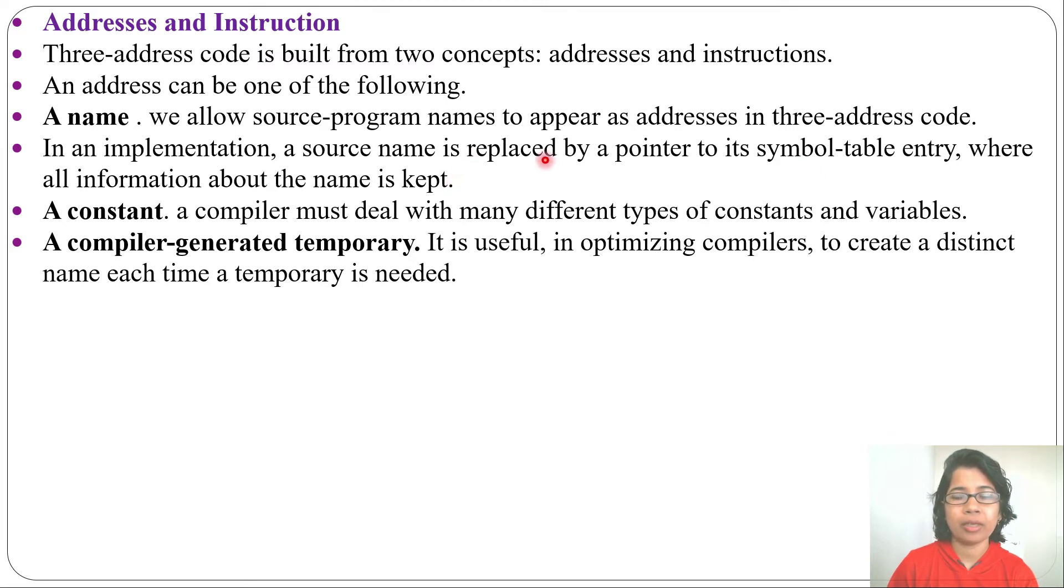As we are keeping all information about the name in the symbol table, compiler can deal with constants and variables. Next, compiler-generated temporaries: it is useful for optimizing compilers to create distinct names each time a temporary is needed. So you can use T1, T2, T3. This subscript can be different, so it will identify one temporary from another temporary.